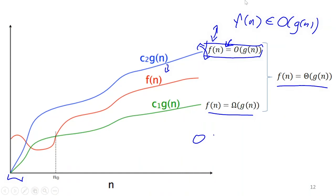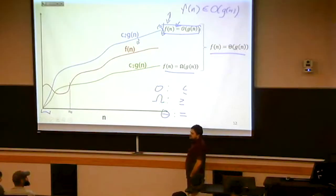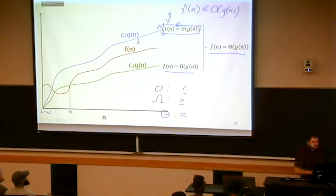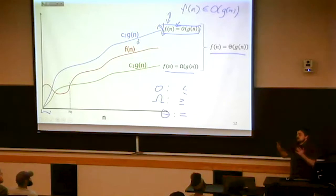So big O is essentially, this essentially means asymptotically less than or equal to. You can think of big omega as saying asymptotically greater than or equal to. And then you can think of big theta as asymptotically equal to. And when we say big O is asymptotically less than or equal to, that means with some fudge factor, it's eventually always smaller. When we say greater than or equal to for big omega, that says with some fudge factor, we're eventually always bigger. And if we say theta exactly equal to, that means you can make both happen.